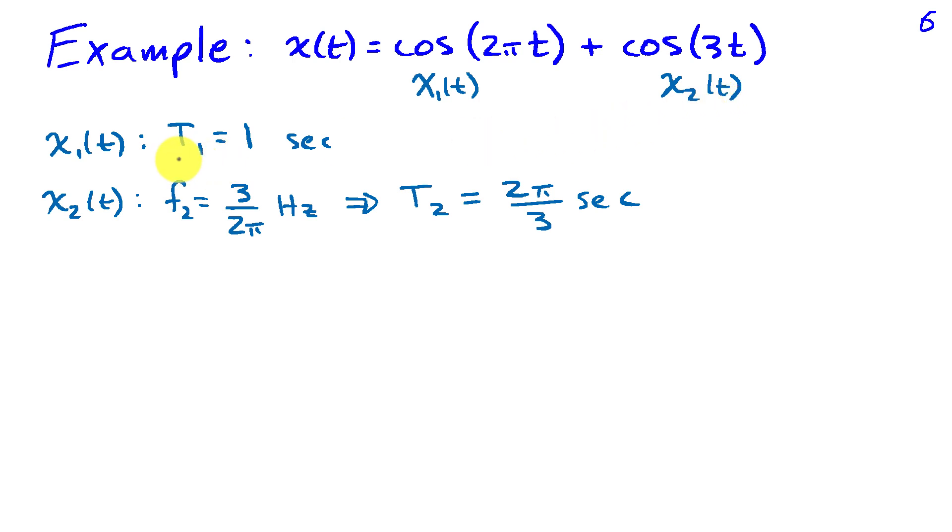The fundamental period for x1, it's a 1 hertz sinusoid so it has a fundamental period of one second. The frequency associated with x2 of t is 3 over 2 pi because I can write 3 as 2 pi times 3 over 2 pi times t.